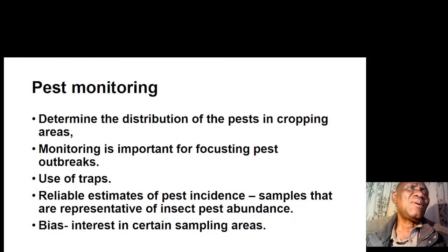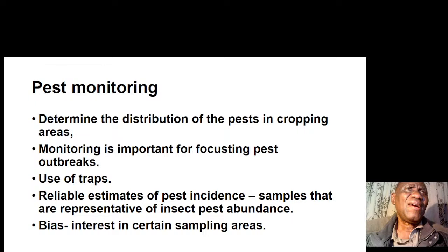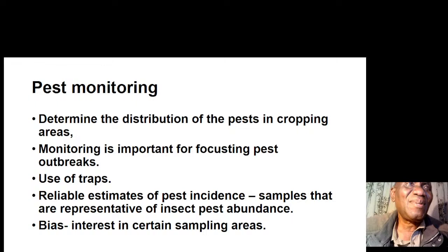We can use traps to get reliable estimates of pest incidence. We need to take samples that are representative of insect pest abundance, because if there is bias toward certain sampling areas we may end up underestimating or overestimating the problem. Proper sampling procedures are required.